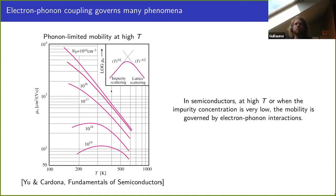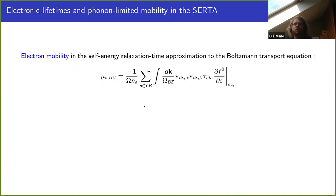This is actually the dominating scattering mechanism at high temperature, because the number of phonons increases, or when the impurity concentration is very low. When the sample is very clean and only the phonons remain, we only have lattice scattering. In this talk we focus on the phonon-limited mobility in semiconductors, and as Matteo explained there are different formalisms to compute the mobility, but for simplicity I will focus on the SERTA.